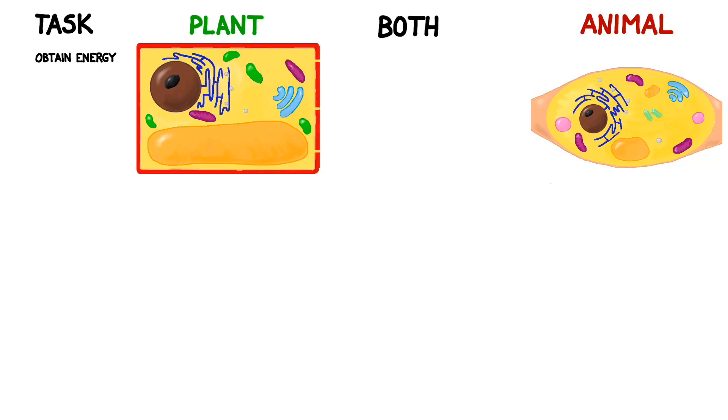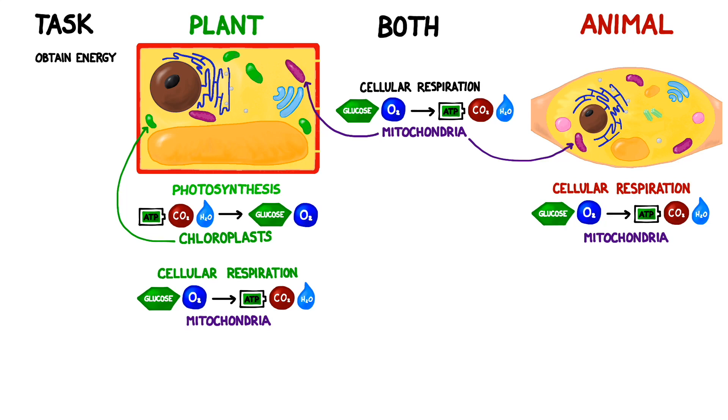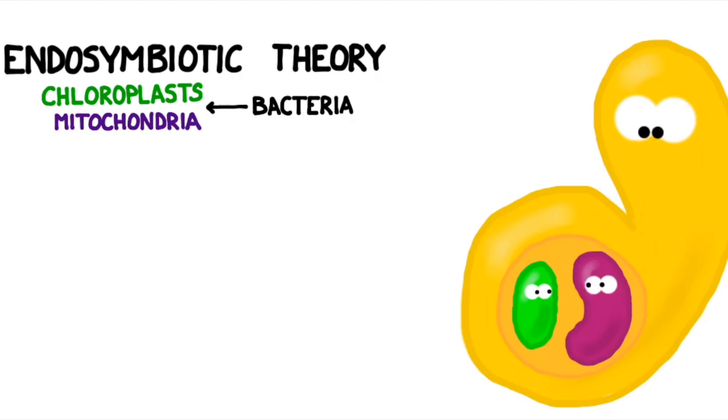Plant and animal cells continue to differ in terms of how they obtain energy. Both cell types are capable of undergoing cellular respiration, which they perform using mitochondria. Most of the time, plants perform photosynthesis in order to harvest energy from the sun. However, they do cellular respiration when they're only seedlings and don't have any leaves yet. Animal cells can't photosynthesize at all, so they use cellular respiration to obtain energy. Scientists believe that both chloroplasts and mitochondria were originally bacteria that were ingested by early cells. We call this the endosymbiotic theory.